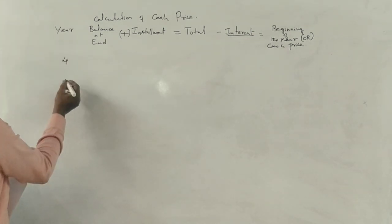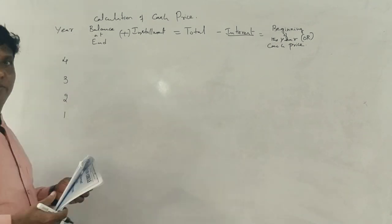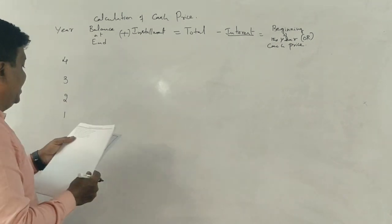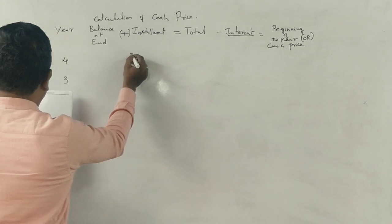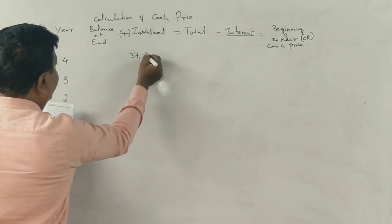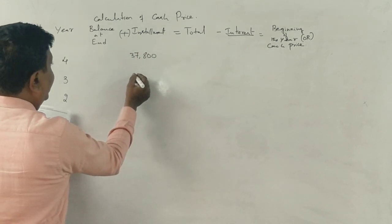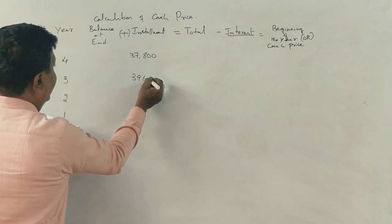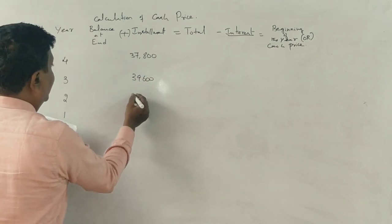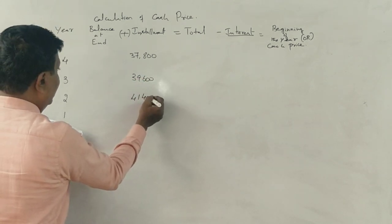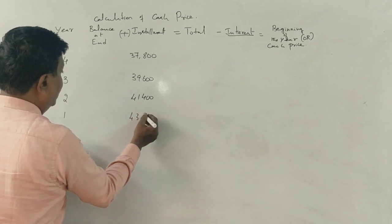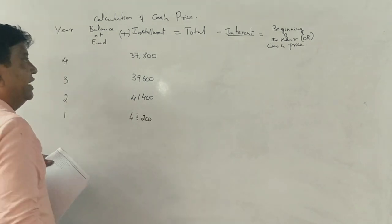4 years, 3, 2, 1. Fourth year 37,800, then 39,600, then 41,400, and 43,200 is correct.